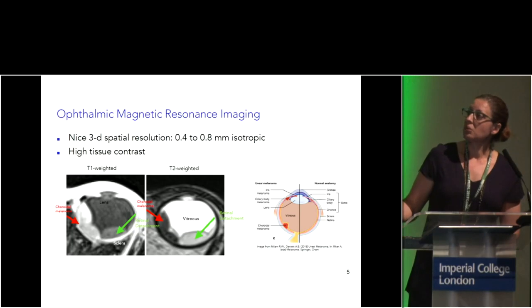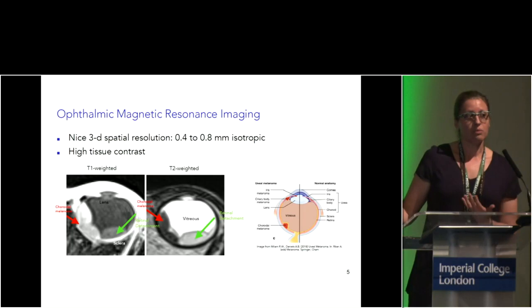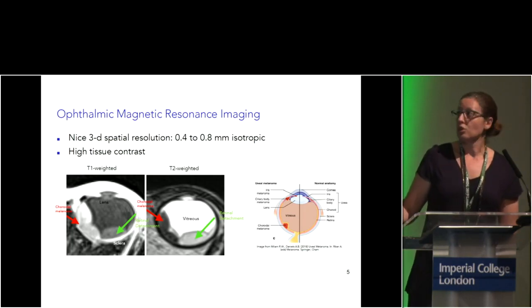You can see here a T1-weighted MRI of the eye with a choroidal melanoma. In a T2-weighted image, the vitreous is visible very well, and you can see the tumor as a dark, hypointense area. You can also see other useful findings like retinal detachment on MRI, as well as the lens and the sclera.